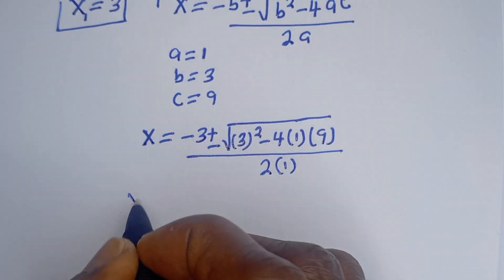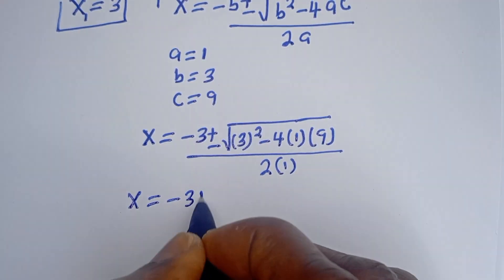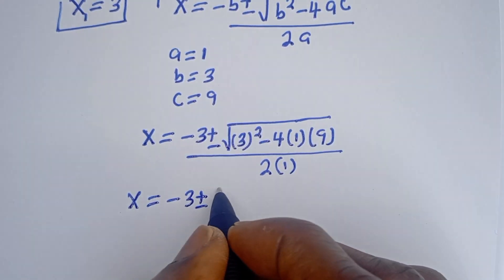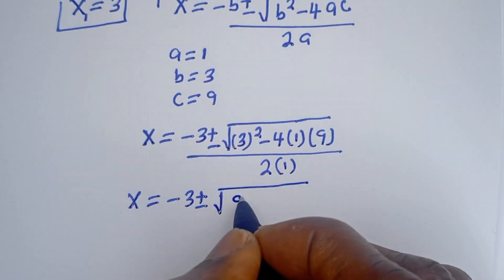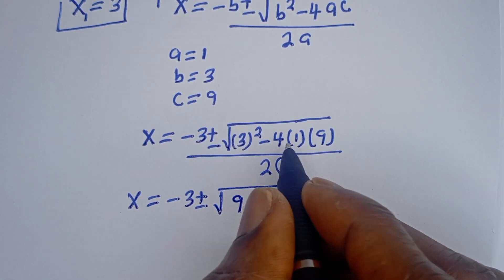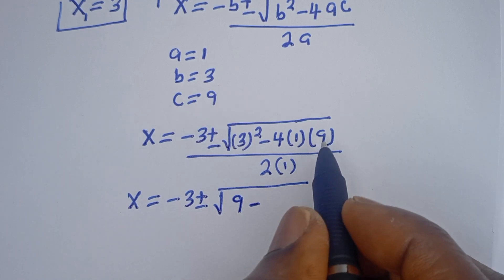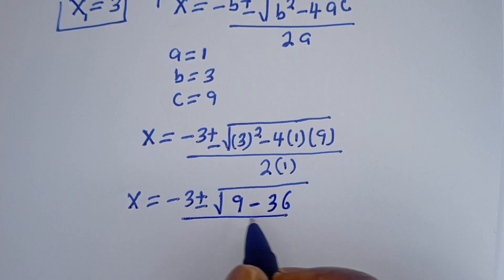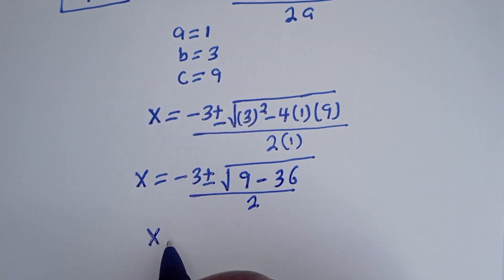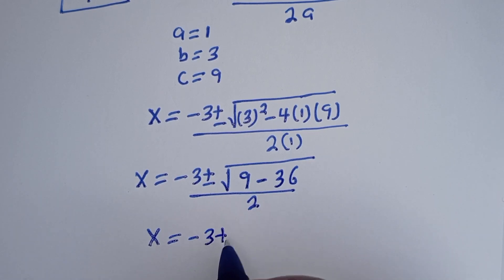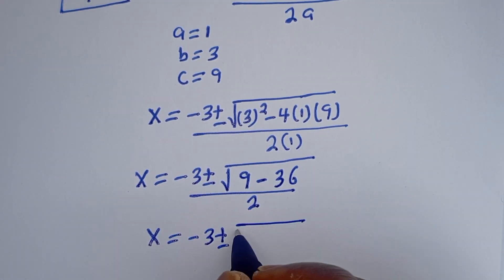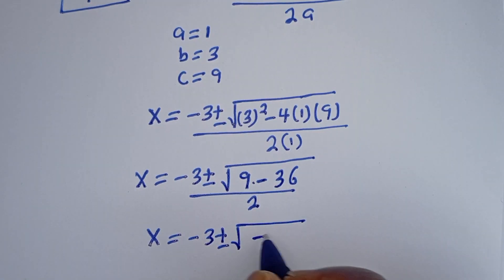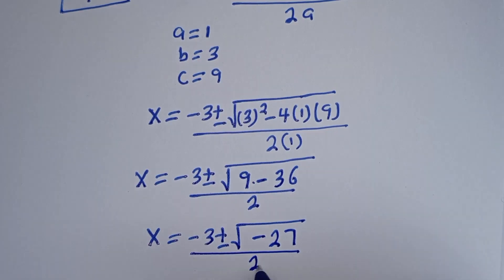Then s equals minus 3 plus or minus square root of 9 minus 4 times 1 times 9, which is 36. So s equals minus 3 plus or minus square root of (9 minus 36), that is minus 27, over 2.